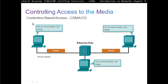In contention-based access, all devices have to compete to be able to send data. What they do first is listen to the carrier — making sure nobody else is sending. If they find the carrier is free, they will start sending packets or frames on the network.